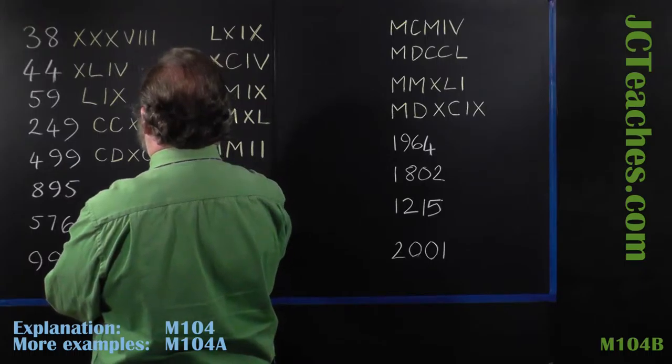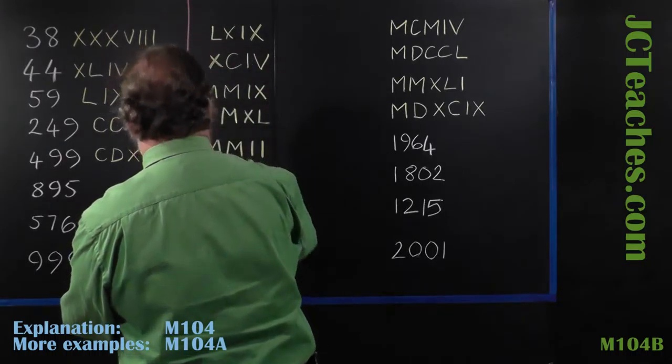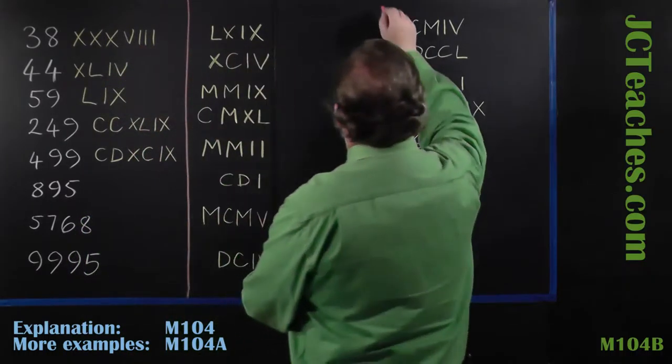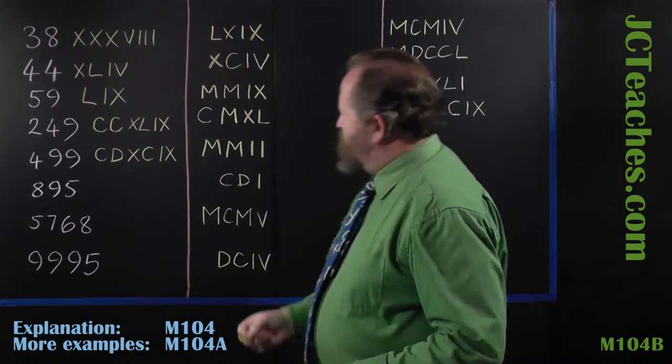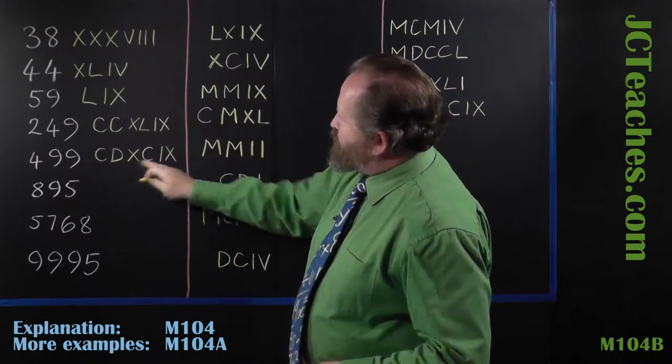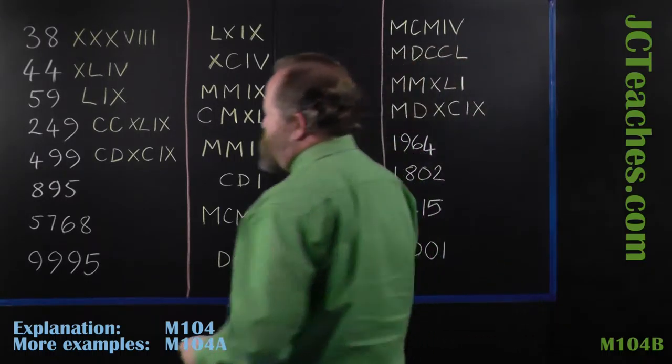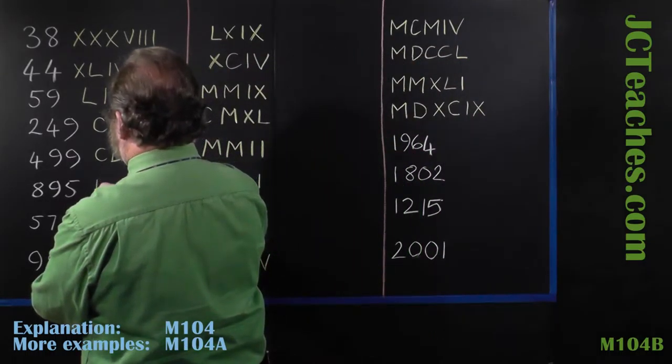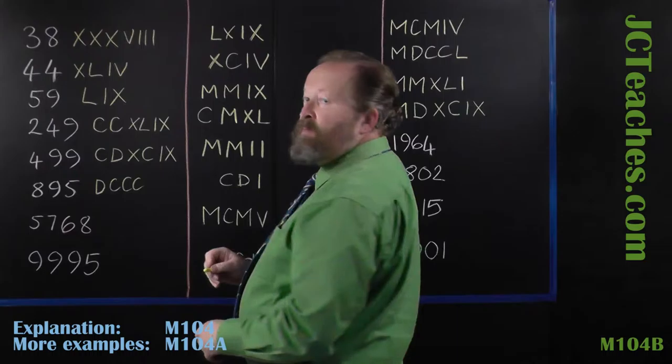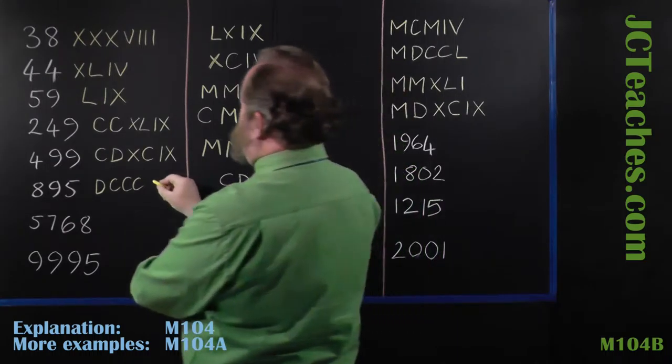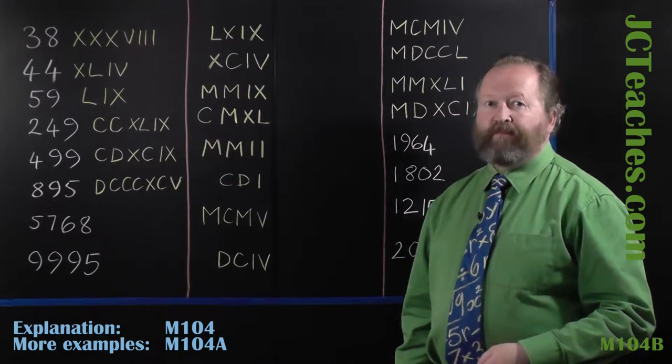I think I'll just put a line down here. I'll do the same over here, so we don't crash into the other questions. 895, 800 is 500 which is D, 600, 700, 800, and 90, five.